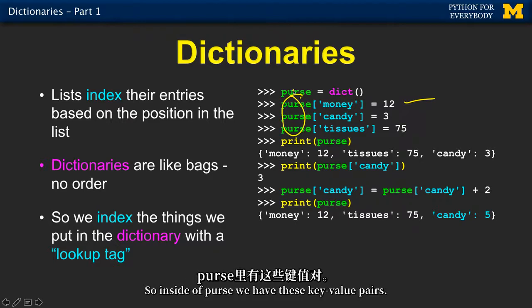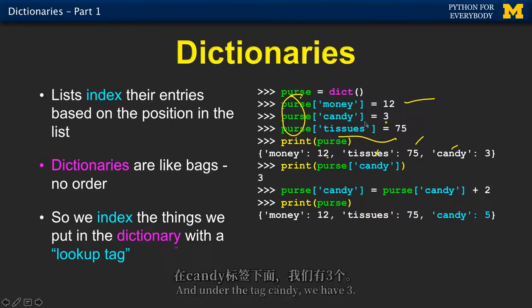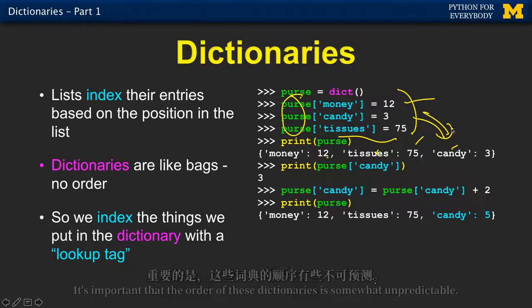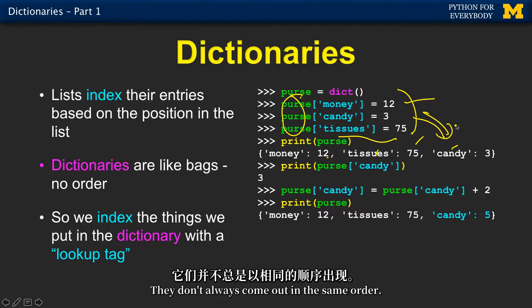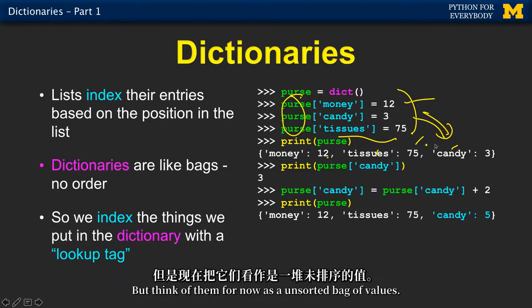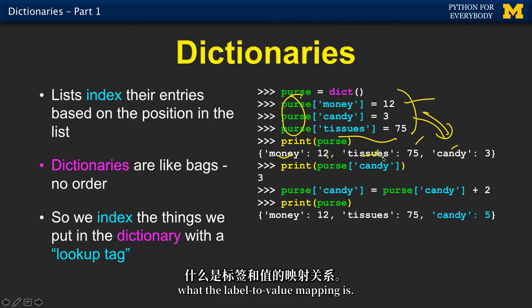So inside a purse, we have these key value pairs. Say, hey, what's in purse? Well, money is three. Under the tag tissues, we have 75. And under the tag candy, we have three. It's important that the order of these dictionaries is somewhat unpredictable. They don't always come out in the same order. So we'll have to learn later about how to sort them and how to do stuff to them. But think of them, for now, as an unsorted bag of values. But it does remember, no matter how they get moved around, what the label to value mapping is.